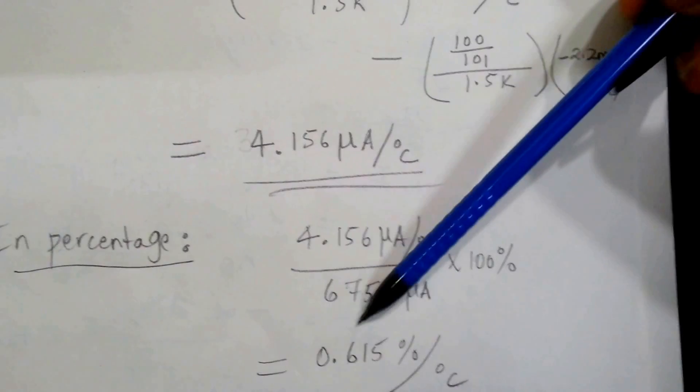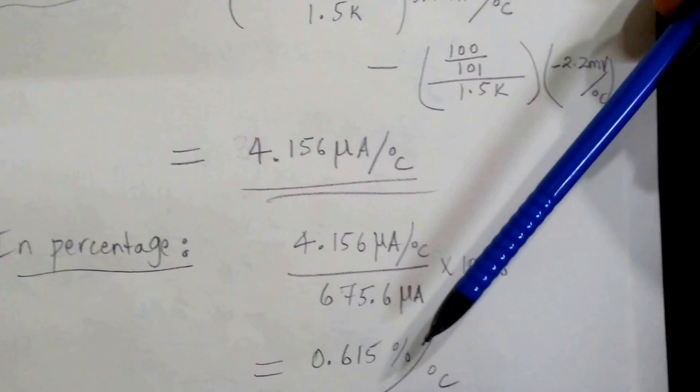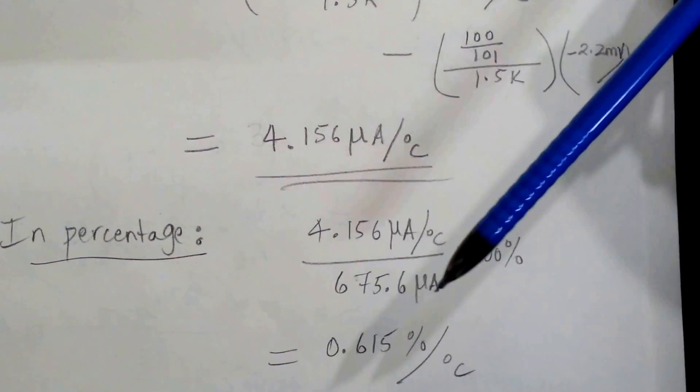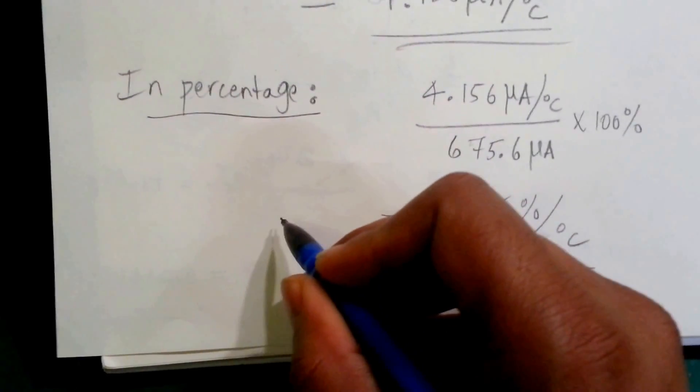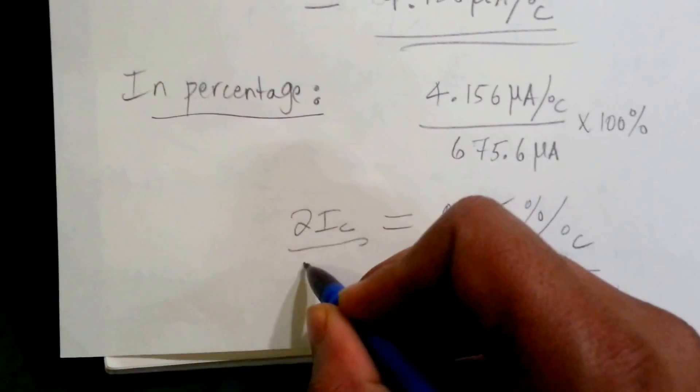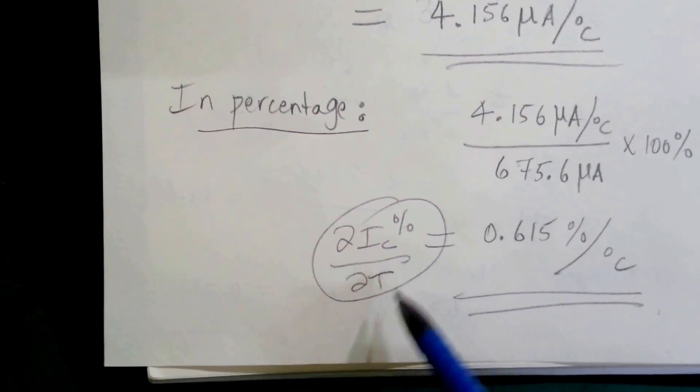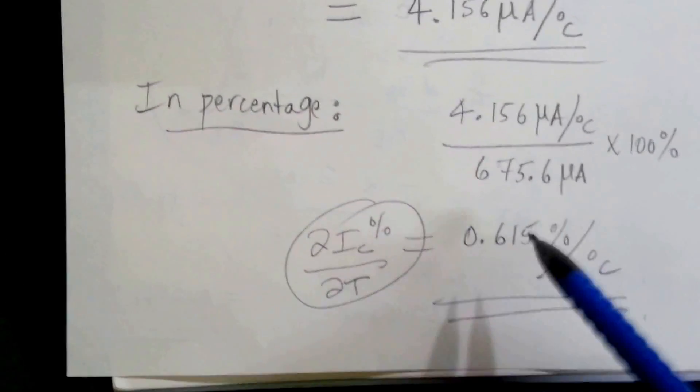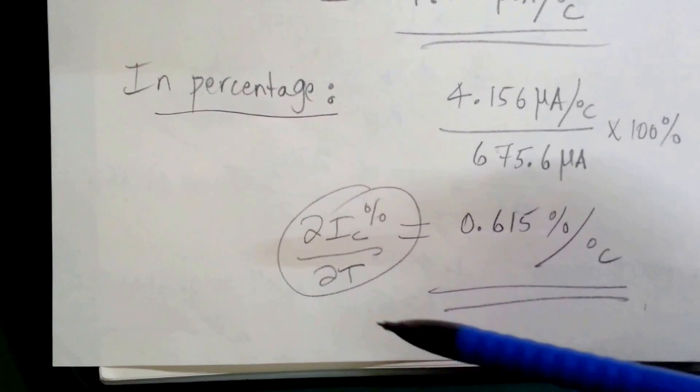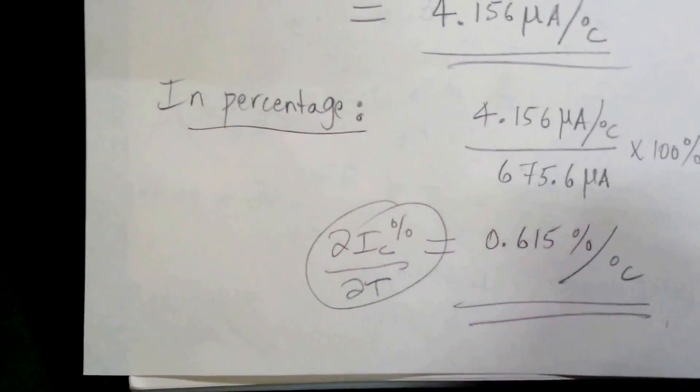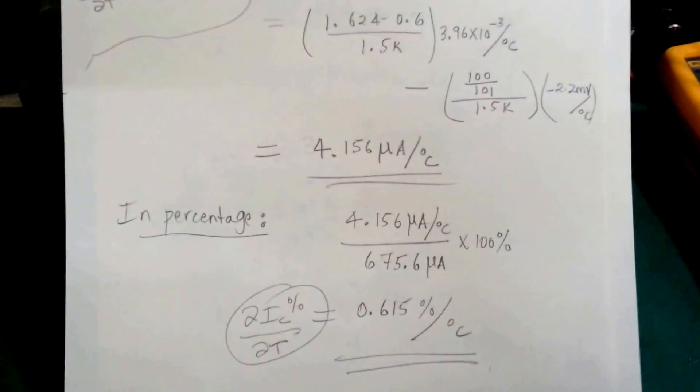As you can see, the combined effect is actually worse than the only temperature effect of VBE. So this is the combined temperature effect on VBE and HFE with respect to temperature. If we actually get this in terms of percentage, the percentage of the current from the nominal value of 675.6 microamps with respect to temperature is 0.615 percent per degree C. So that completes solving question number 2, chapter 2 of the Art of Electronics.